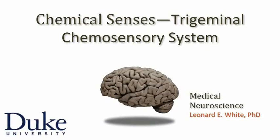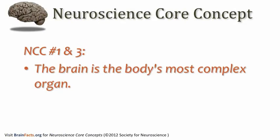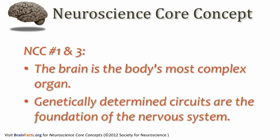Welcome to the final component of our tutorial on the chemical senses. In this part, we come to consider the trigeminal chemosensory system. We continue to explore the complexity of the human brain through an analysis of some of the circuitry for sensation that's genetically determined and serves as the foundation for sensation, perception, sensory motor integration, and ultimately the behaviors that are stimulated or motivated by our sensory experiences. The chemical senses can be a very powerful motivator of behavior.